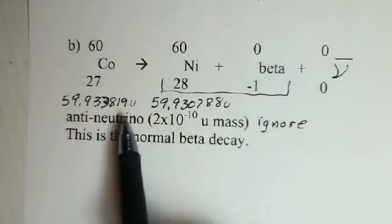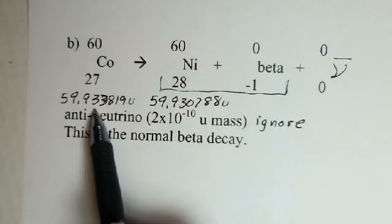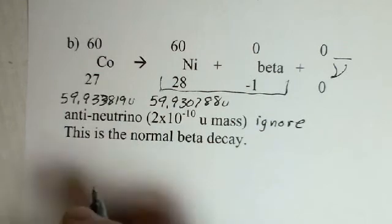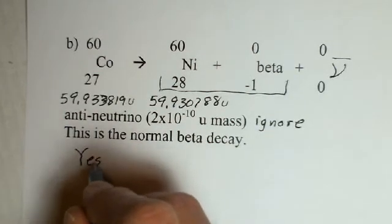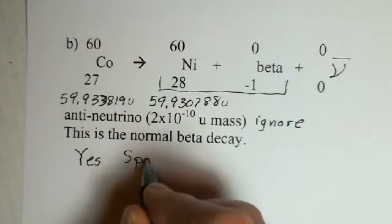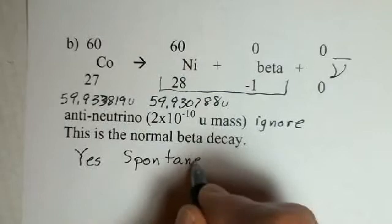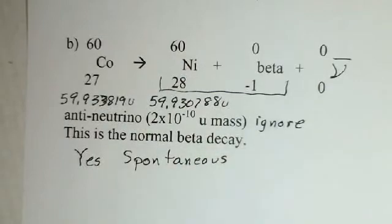Okay, let's look at what we have. We have 59.933 here, 59.930. There is more mass on the left side. So, yes, this is spontaneous. It can be spontaneous. There'll be a certain half-life for this reaction. Again, you could look up in a table on that.